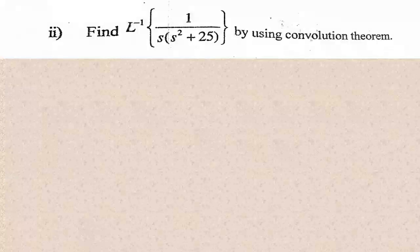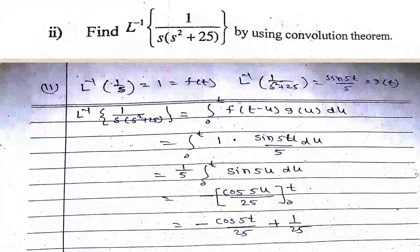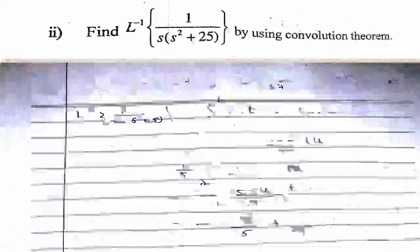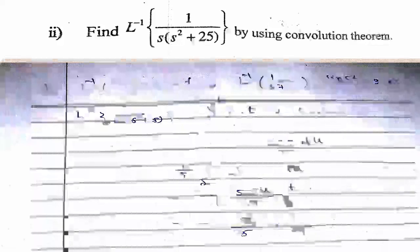Find L⁻¹{1/(s(s²+25))} using the convolution theorem. L⁻¹{1/s} = 1 = f(t); L⁻¹{1/(s²+25)} = sin(5t)/5 = g(t). By convolution: L⁻¹{1/(s(s²+25))} = ∫₀ᵗ 1·sin(5u)/5 du = (1/5)[-cos(5u)/5]₀ᵗ = -cos(5t)/25 + 1/25.